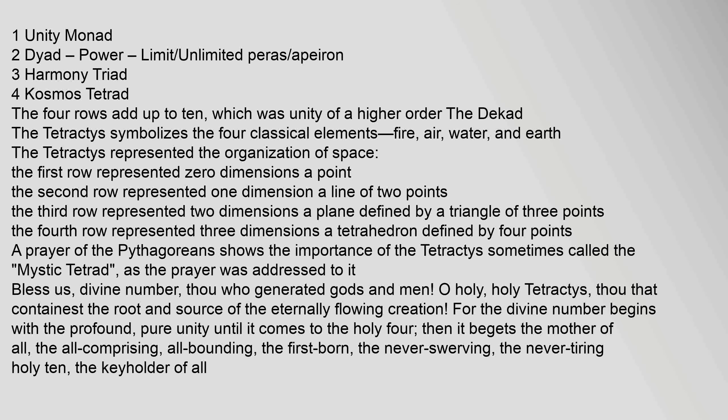The four rows add up to 10, which was unity of a higher order — the Decad. The Tetractys symbolizes the four classical elements: fire, air, water, and earth. The Tetractys represented the organization of space: the first row represented zero dimensions — a point; the second row represented one dimension — a line of two points; the third row represented two dimensions — a plane defined by a triangle of three points.